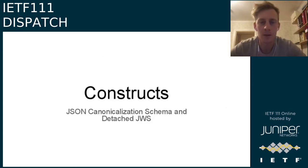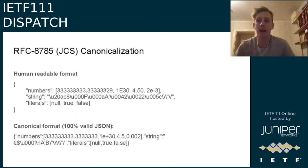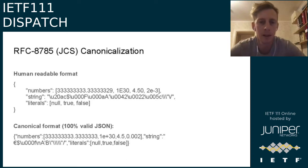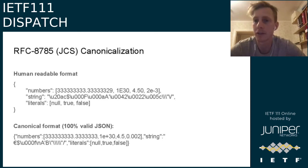The canonicalization used to get something signable is JCS, RFC 8785, which takes JSON and puts it in a canonical JSON format. It's 100% JSON valid but limits the expressibility of JSON slightly by limiting it to I-JSON. There are always number-format discussions, but it works very well in practice as it's been extensively tested. There have also been conversations about this on the dispatch mailing list.